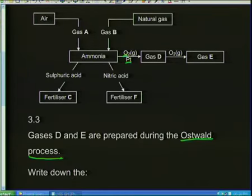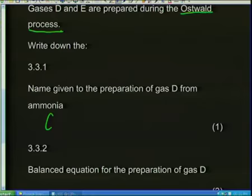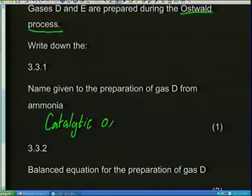They want a balanced equation for the preparation of gas D. Gas D is NO. I know there is ammonia NH3, and I put in some oxygen. The nitrogen and oxygen get together to produce NO. Now, using a catalyst on top of my arrow, I'm catalytically oxidizing my ammonia: NH3 + O2 → NO + H2O. What happens to the hydrogen? With oxygen and hydrogen around, you're going to get some water.